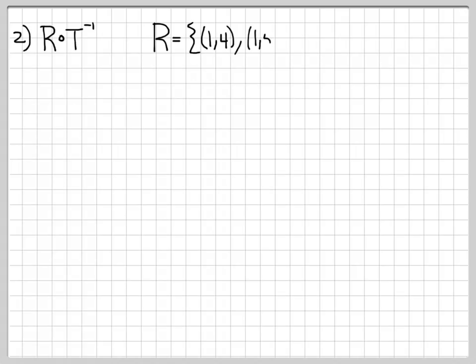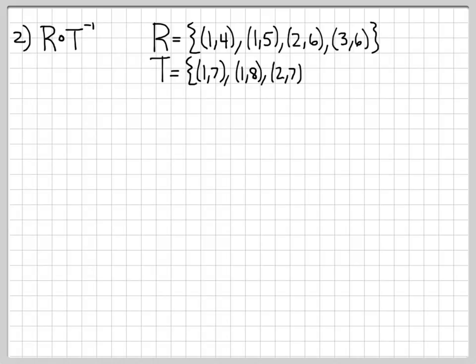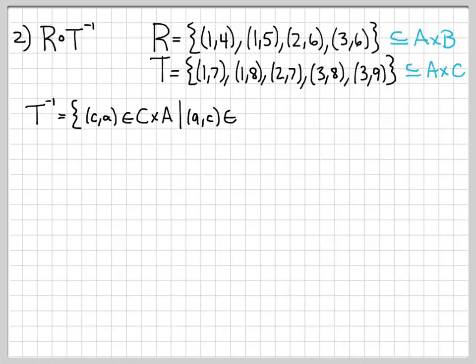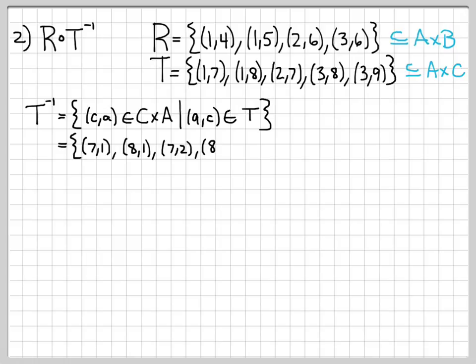Now for part two, we're going to work with relations R and T inverse and compute R∘T⁻¹. First we need to find T inverse. By definition, T inverse is the set T with all coordinates reversed — if (a,c) is in T, then (c,a) is in T inverse. So we take every element of T and flip the coordinates: (1,7) becomes (7,1), (1,8) becomes (8,1), (2,7) becomes (7,2), (3,8) becomes (8,3), and (3,9) becomes (9,3). That is T inverse.